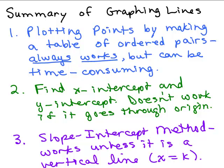And the third method was the slope intercept method, where we put it in the form y equals mx plus b, and this works unless the line's a vertical line, which means it's at the form x equals k, which means you can't solve for y and put it in that form.